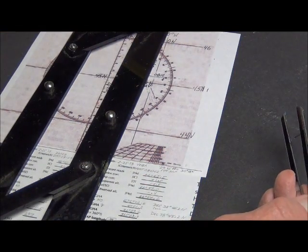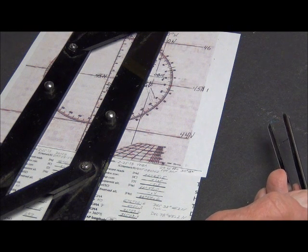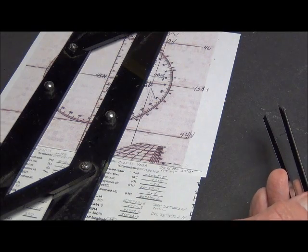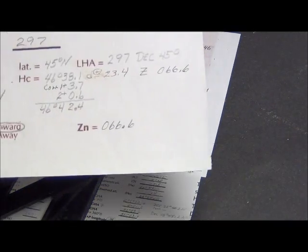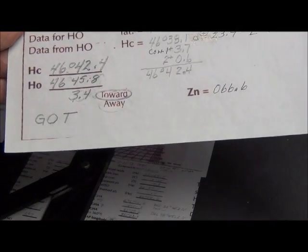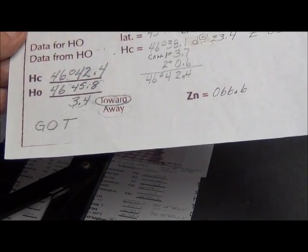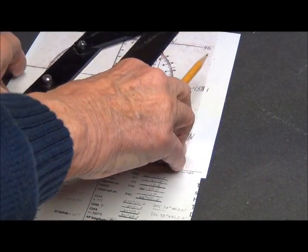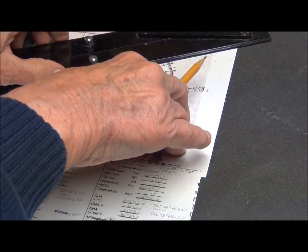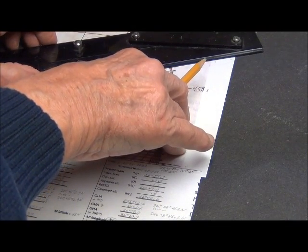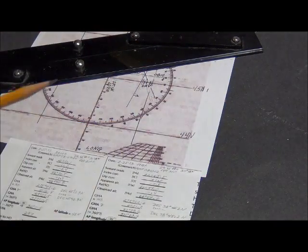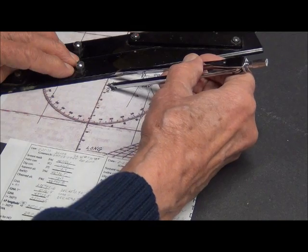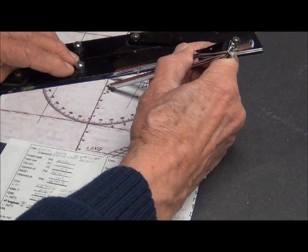The next one would be, let's say, Deneb. Deneb was three point four towards zero six six point six. So we put our parallel rulers at zero six six point six.